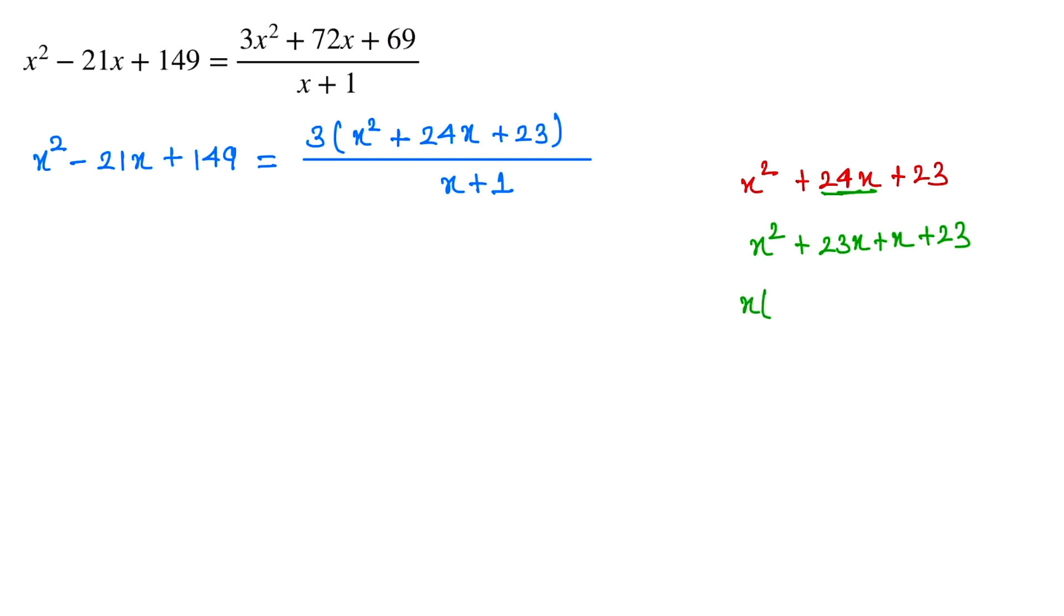We take the common x, that is x(x + 23), and here we take the common 1, so (x + 23). So (x + 1) and (x + 23). We put this value at this position.